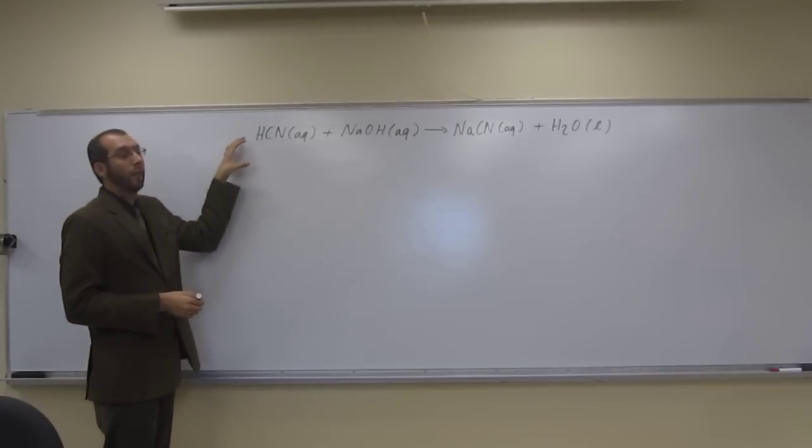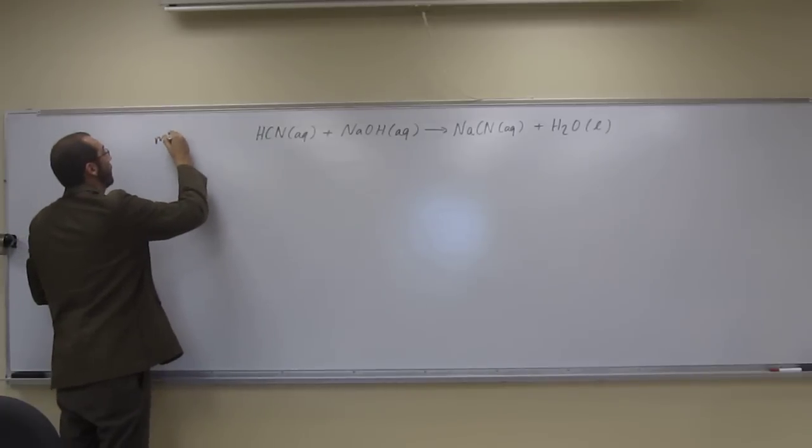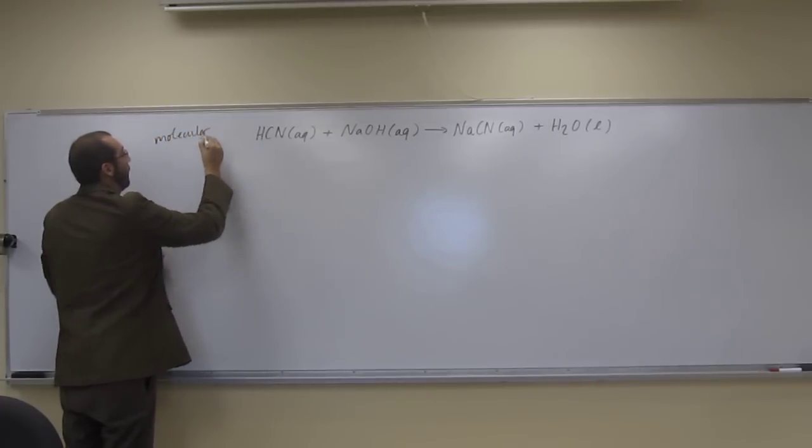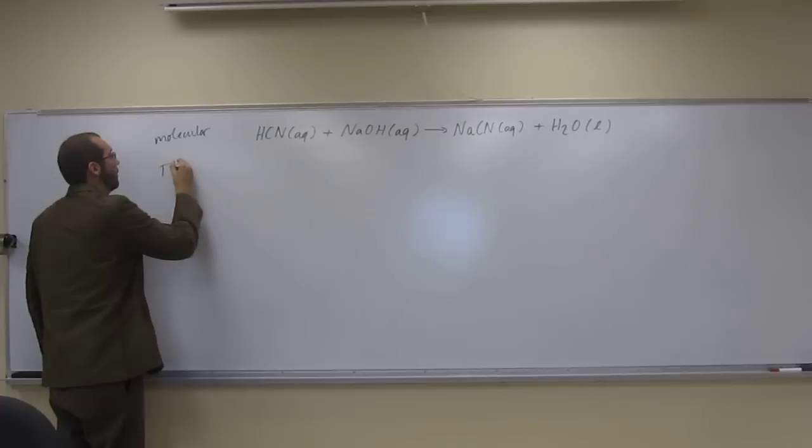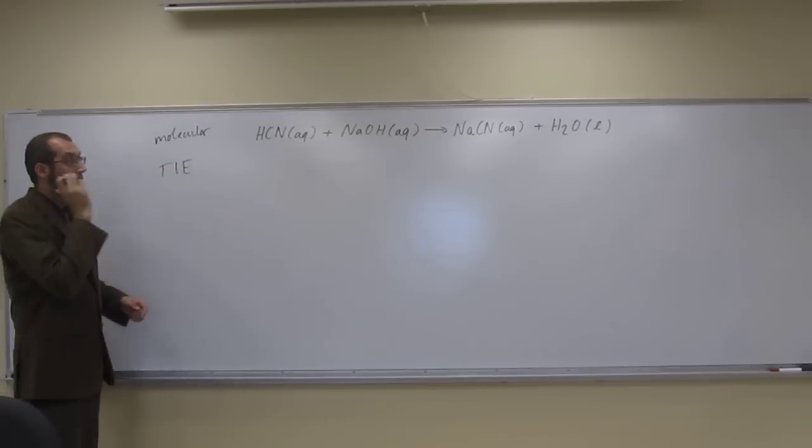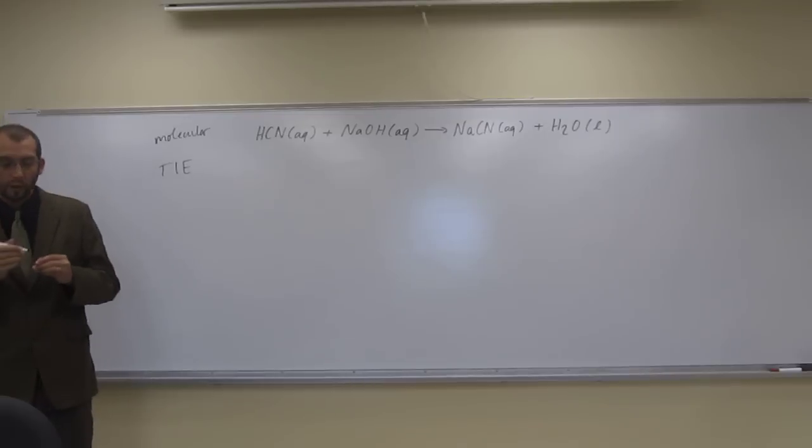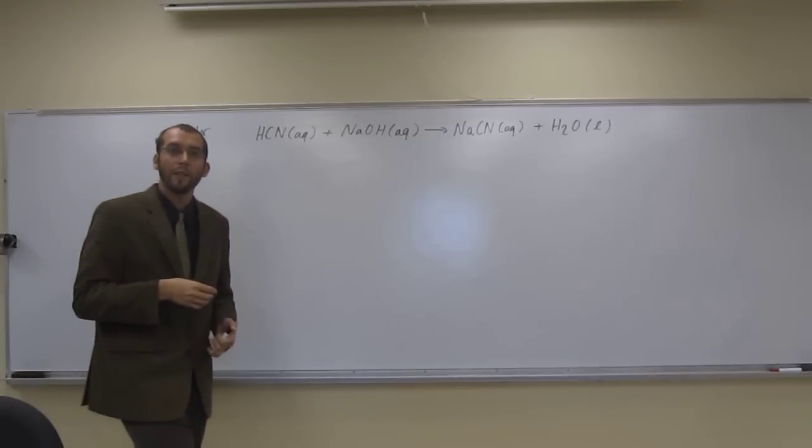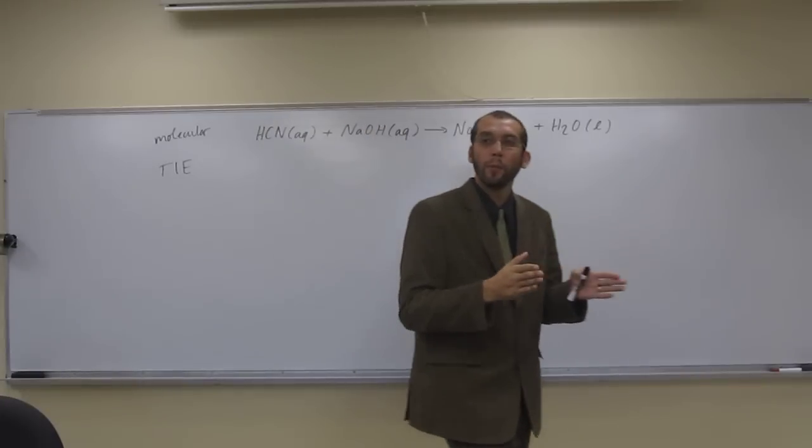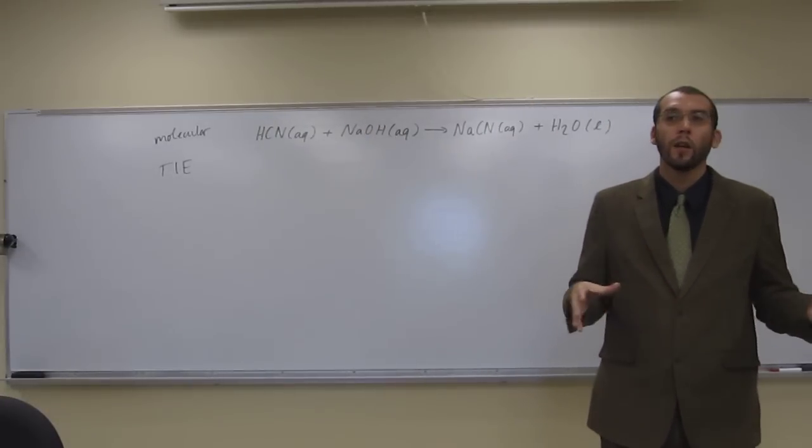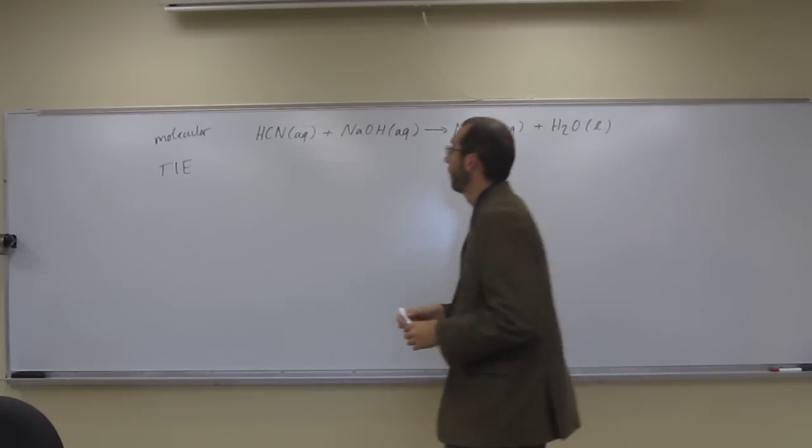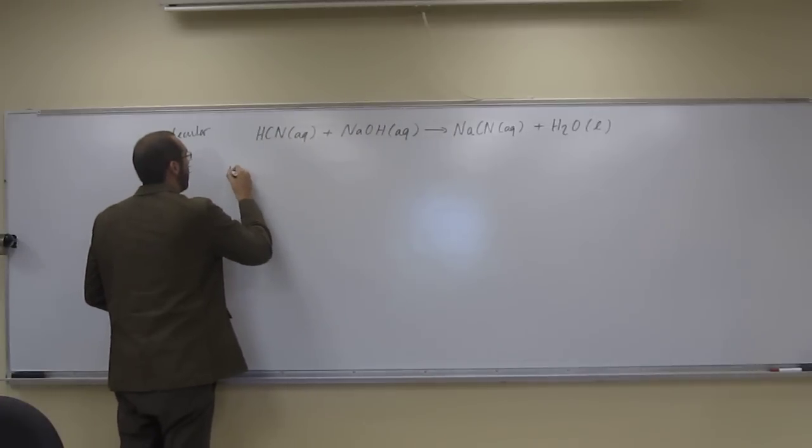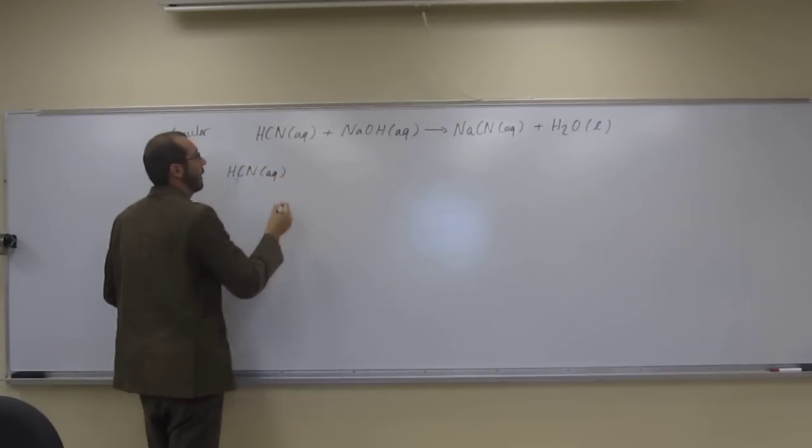So in the total ionic equation, we're going to break up everything that breaks up. Even though those weak acids are weak electrolytes, so they break up a little bit, in the total ionic equation we're not going to show them breaking up. So HCN aqueous stays together.